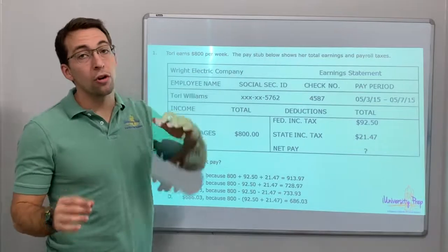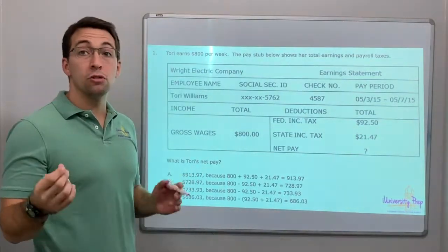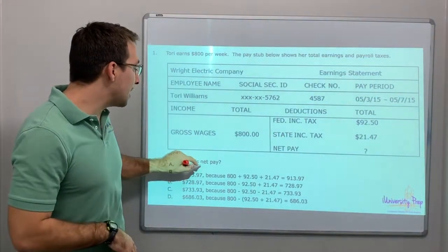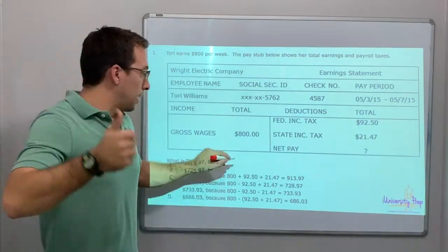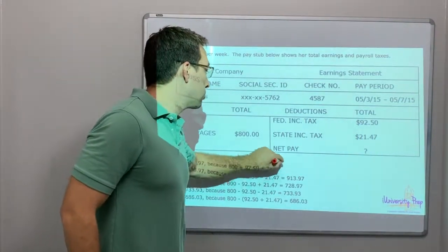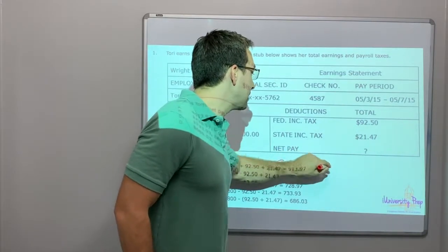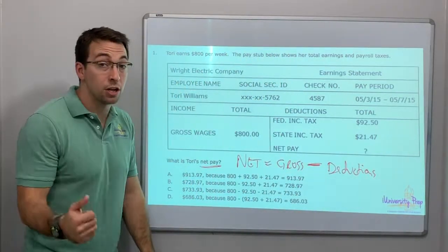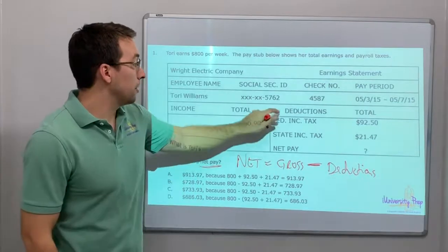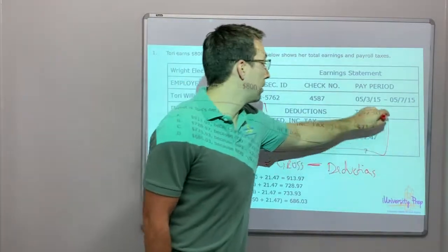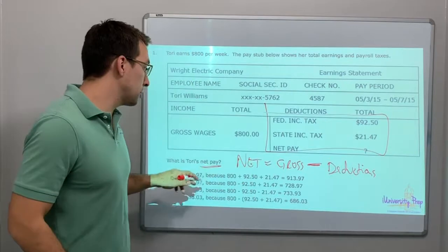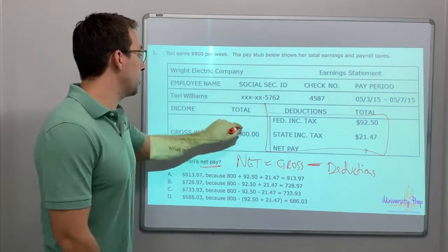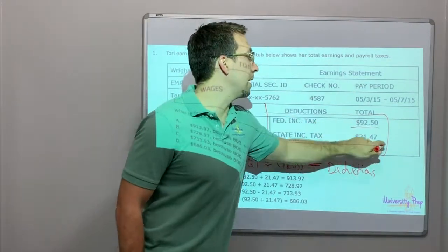All right. So here's your question. Tori earns $800 per week. The pay stub below shows her total earnings and payroll taxes. What is Tori's net pay? Net equals gross minus deductions. What are the deductions? Those are taxes. So here are the deductions right here. So net equals, net pay equals $800 minus $92.50 minus $21.47.